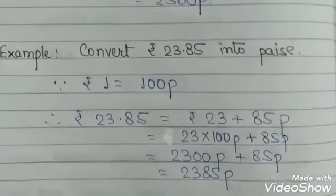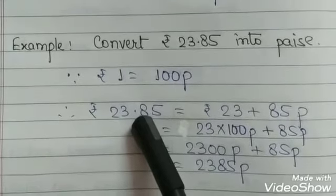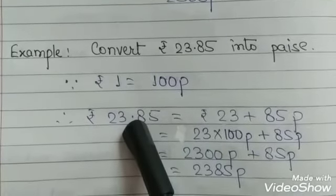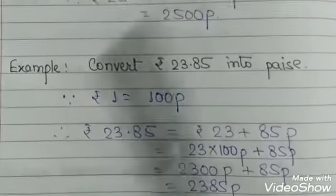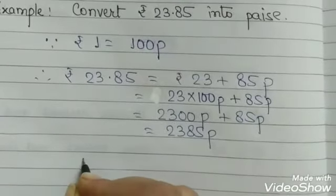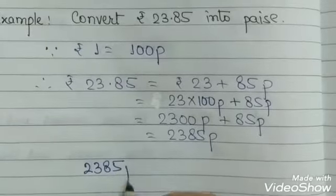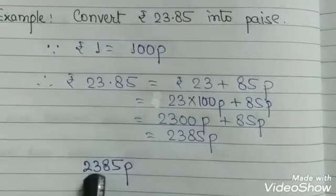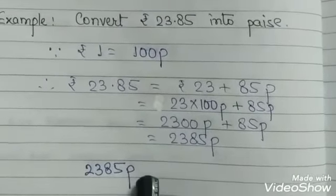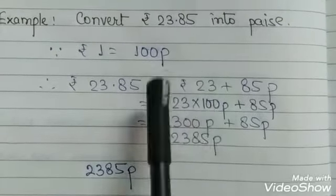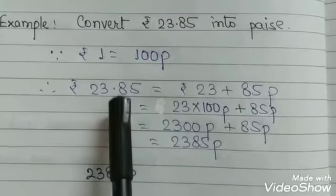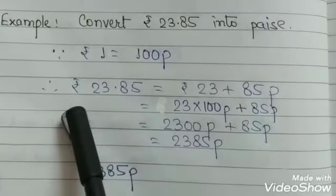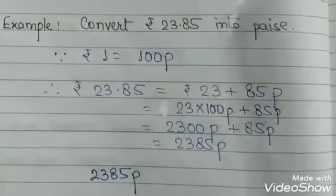There is an easy trick: to convert rupees and paise to paise, simply remove the dot and the rupees symbol, and write 'p' at the end. So ₹23.85 becomes 2385p. This is the simple trick. If you need to show the full method, solve step by step; otherwise, just remove the dot and rupee symbol and write 'p' at the end.